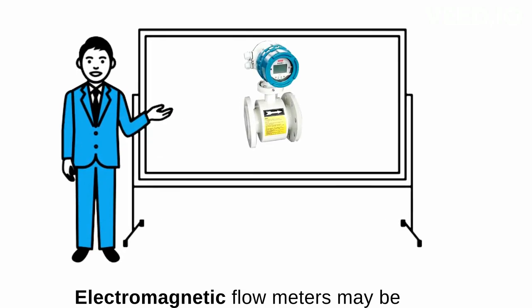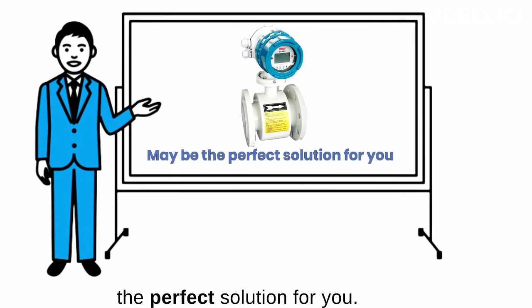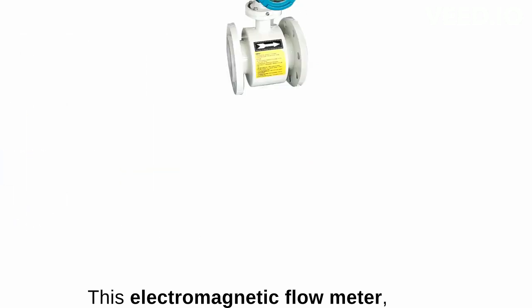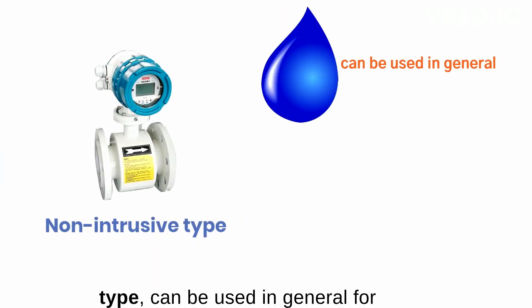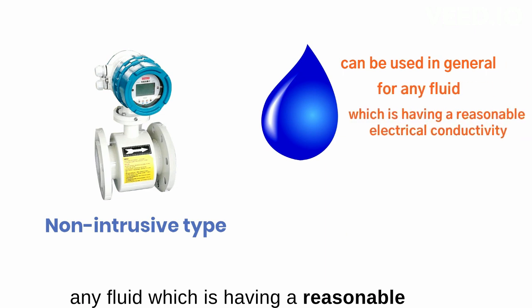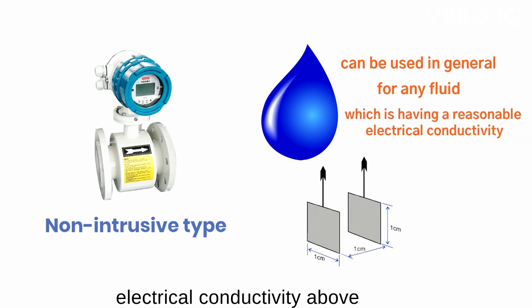Electromagnetic flow meters may be the perfect solution for you. This non-intrusive device can be used for any fluid with electrical conductivity above 10 microsiemens.